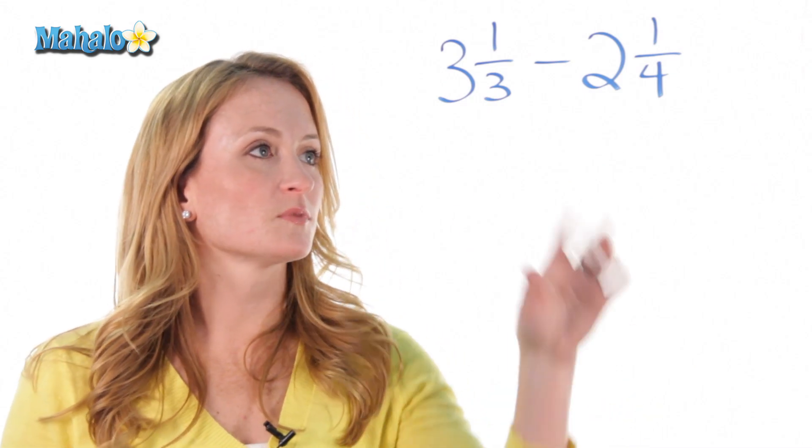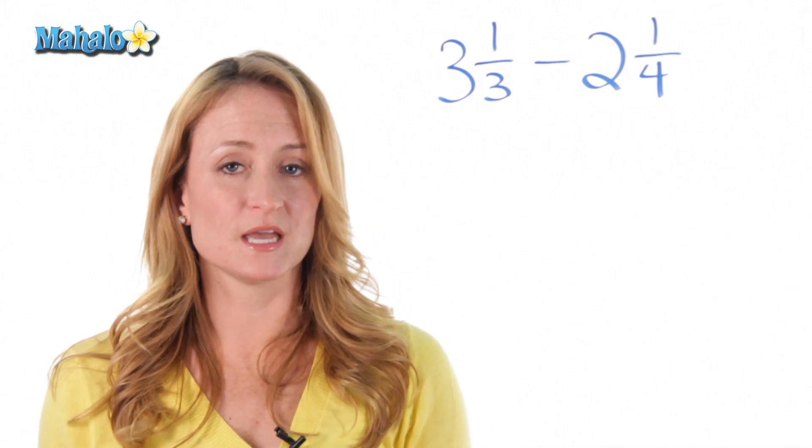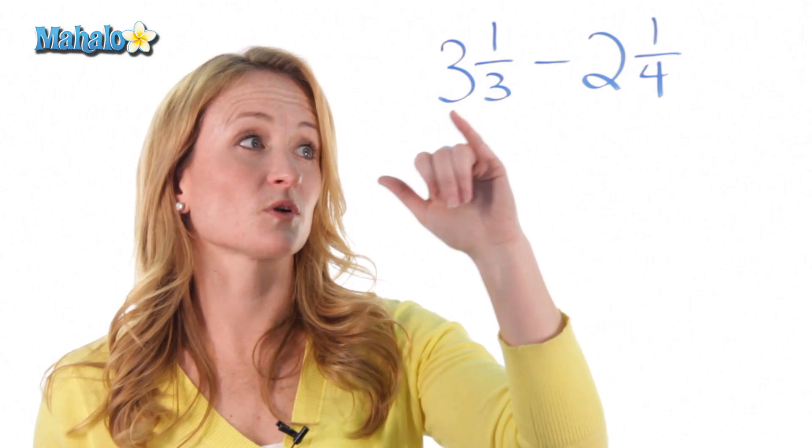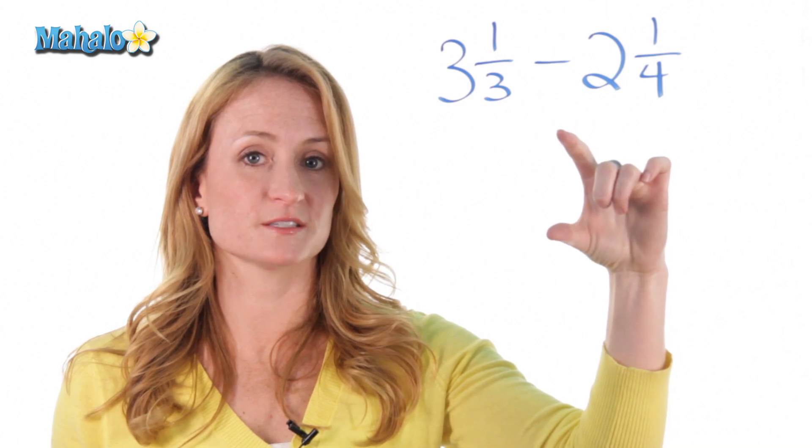So, let's start with a way that you can do these problems the same way every time and not get it wrong. For example, some people think that you can just do 3 minus 2 and get 1, and then do 1 third minus 1 fourth, and get whatever that fraction is.